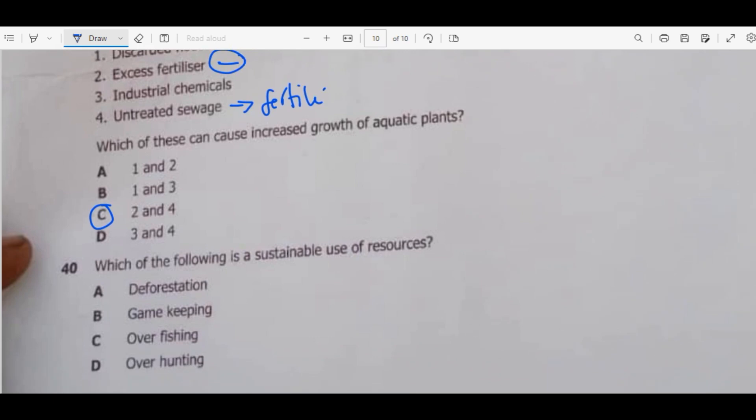Question 40. Which of the following is a sustainable use of resource? Deforestation or game keeping, over fishing. The answer is B. So that's it for this. Thank you for watching.